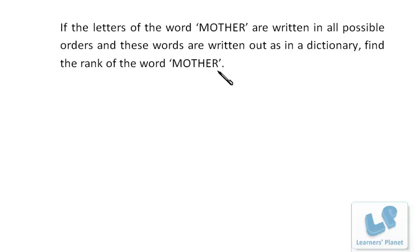So first of all, let's find out what is the dictionary order. First, we have to calculate the words from E, then H, then M and then remaining. But we are interested till here only. So first, let's find how many words will begin from E. We have six letters and E, the first letter is E and the remaining letters are five. So five letters at the five places can be arranged in 5 factorial ways.